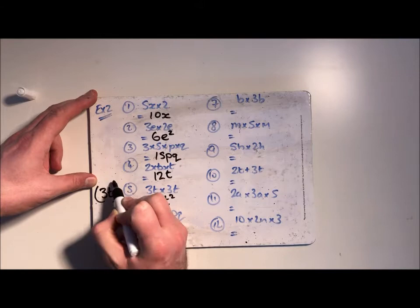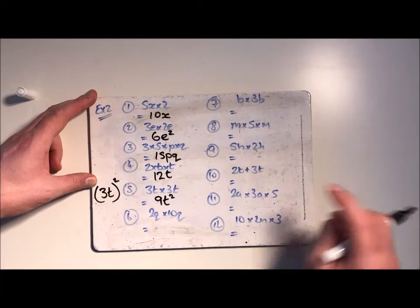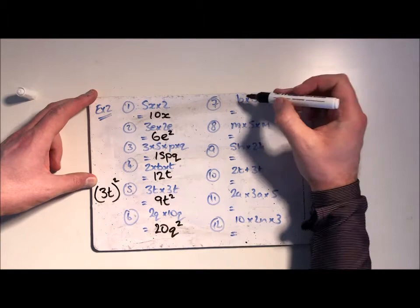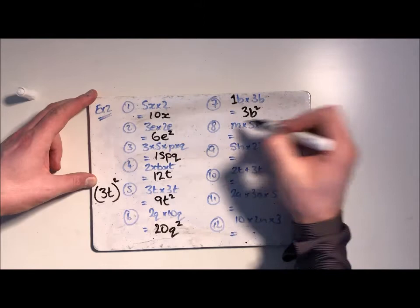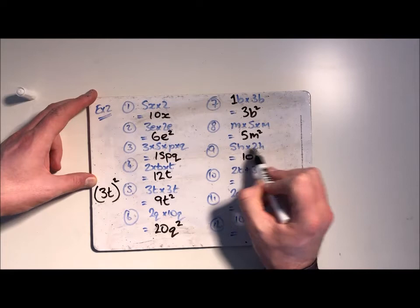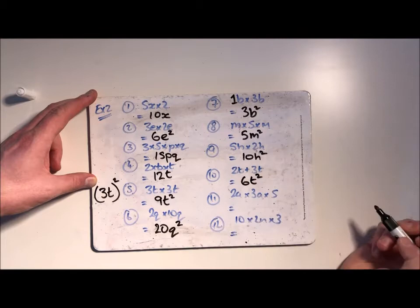Now that one interestingly could also be written like this. That's going to be useful somewhere else in one of the other exercises. 2 tens are 20, q multiplied by q is q squared. b times, now technically there's a 1b, there's a 1 in front of that b, so 1 times 3 is 3 and b times b is b squared. m times m is m squared and then the 5 at the start, 5m squared. 5 twos are 10 and h multiplied by h is h squared. 2 threes are 6, much the same as that previous one, 6t squared.